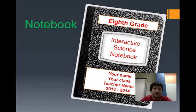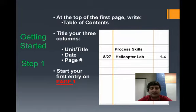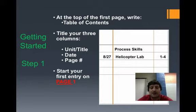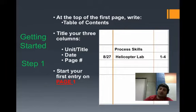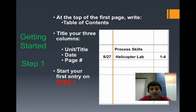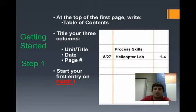After you get that set up, the next thing you're gonna do is go to your table of contents. This can be your very first page, and you'll have a different table of contents for each semester. On the very first page, put 'Table of Contents' across the top. Underneath it, you'll see I have something already labeled — it's gonna be 'Process Skills,' which is an introduction to our unit, and then the very first thing we'll do in class, which is the helicopter lab, with the date and a page number.